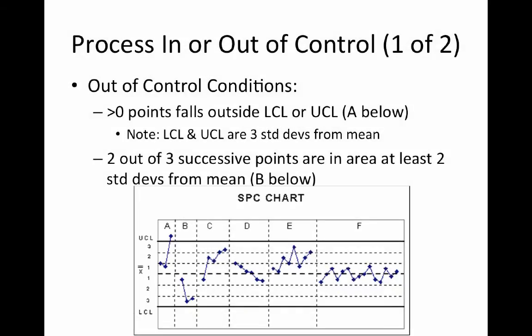B is another example here of a process out of control, and it's two out of three successive points at least two standard deviations from the mean. The most common one you'll probably see is A, but then there's these others that also dictate that a process is out of control.